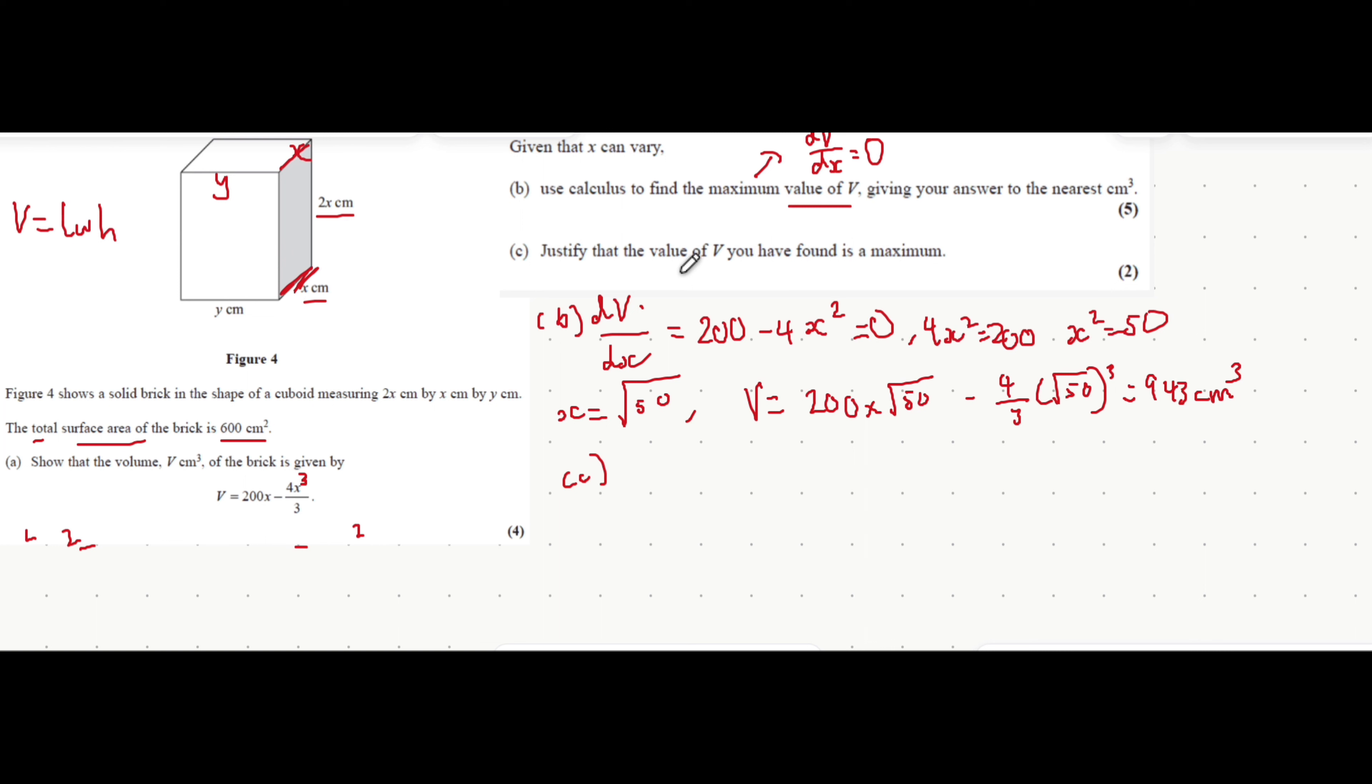On to part c. It's asking you to justify whether this is a maximum. At a maximum, not only is the differential equal to 0, which we know is true, but the second differential, d squared v over dx squared, should be negative. Let's first find d squared v over dx squared by differentiating this function here.